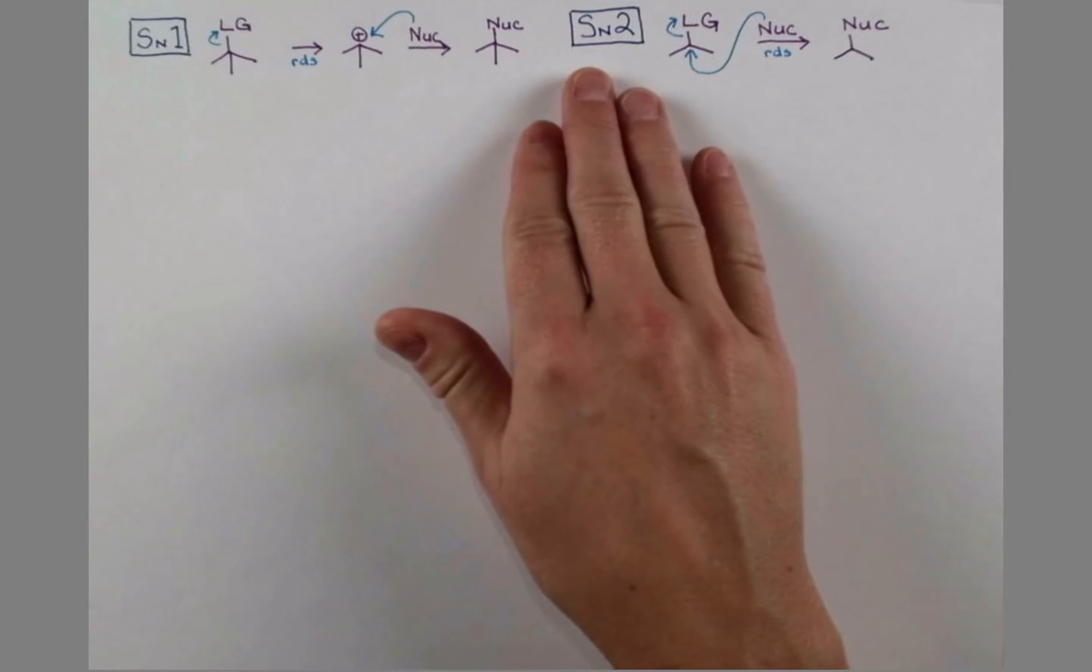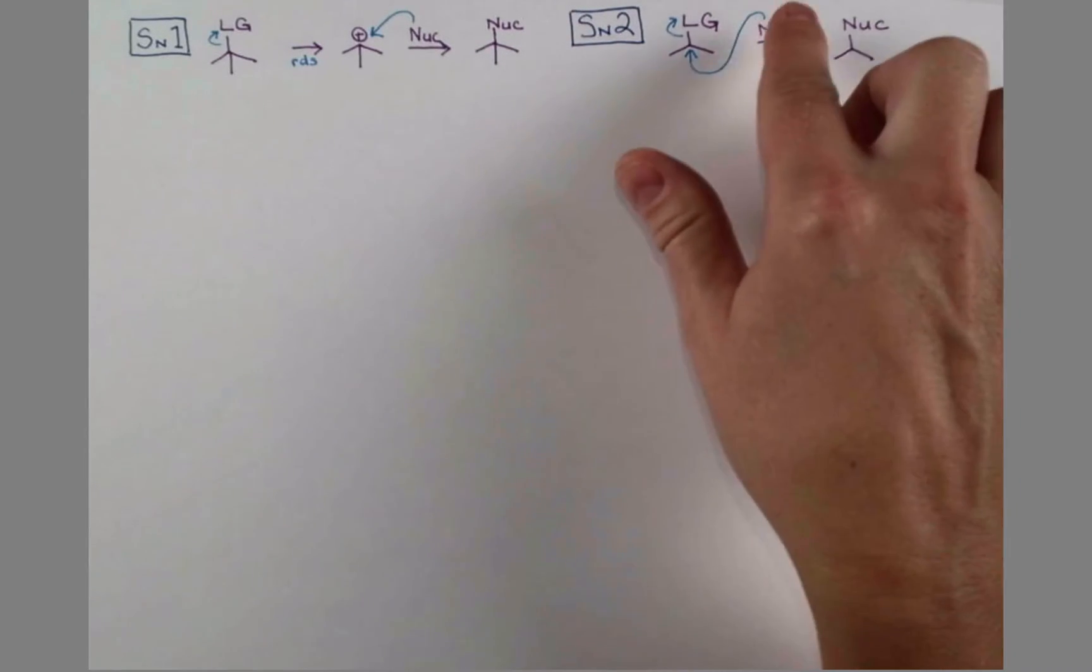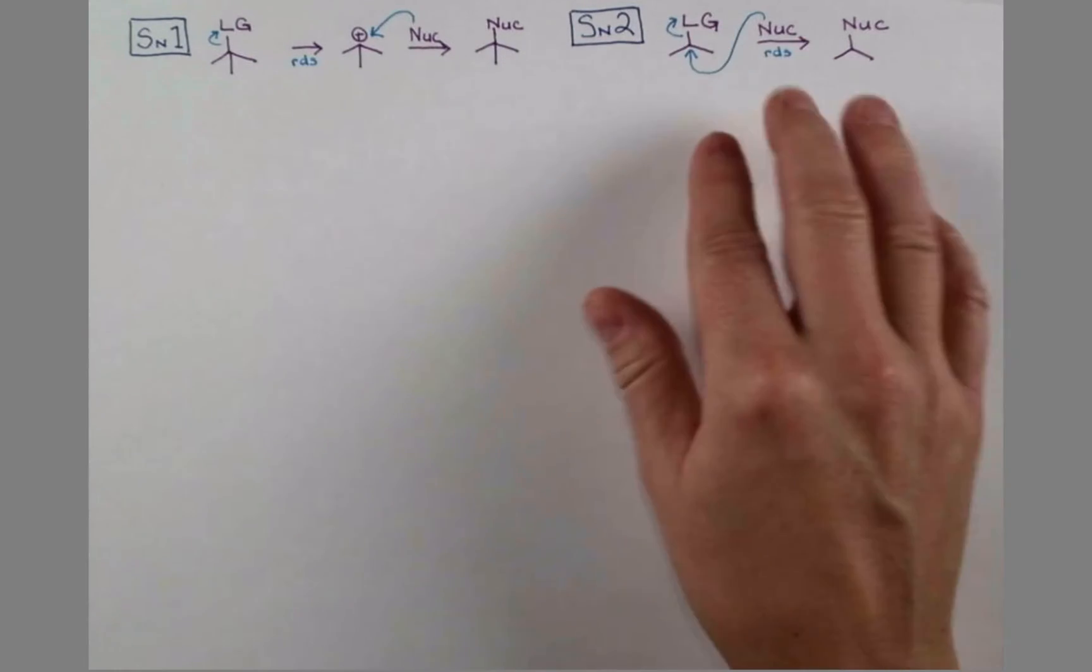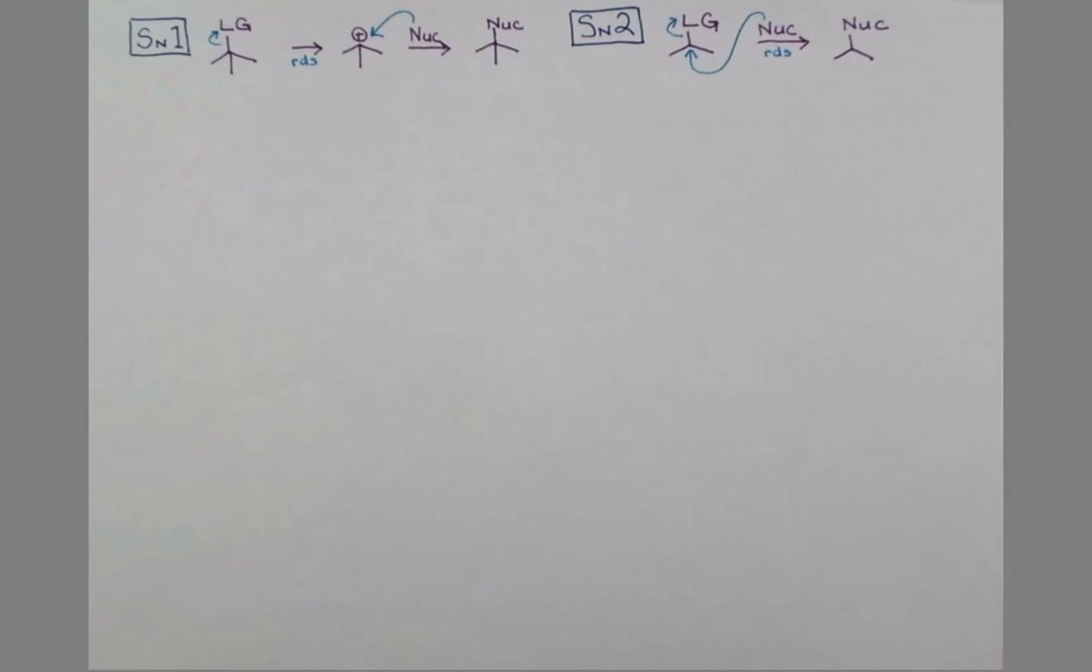In the SN2 reaction, the nucleophile is involved in the rate-determining step. This is pushing out the leaving group here. And so stronger nucleophiles will promote SN2 reactions in our borderline cases.